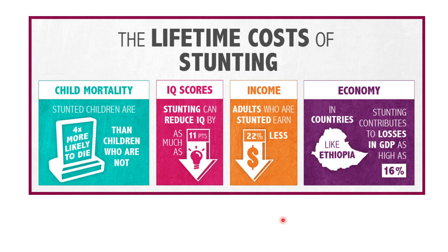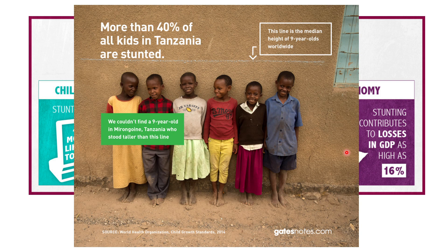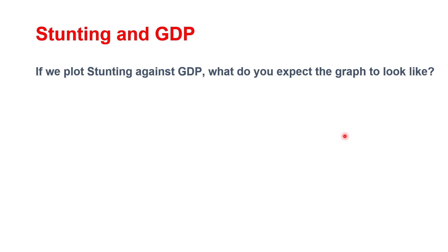Stunting is a tremendous problem — child mortality, IQ scores, which have a tremendous impact, because if your IQ is lower you become less productive throughout your entire life and earn a lot less as an adult. In a country where a significant portion of the population is stunted, you can have a severe decrease in GDP. Here's a picture from Tanzania: they found the tallest girls in a village and lined them up. That line in the back represents the median height of nine-year-olds around the world. Stunting is a huge issue. So if we plot stunting against GDP per capita, what do you expect the graph to look like?